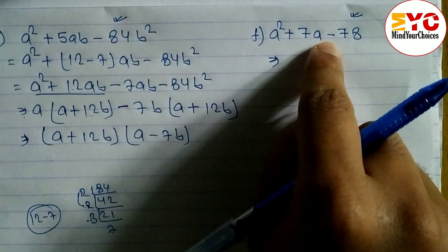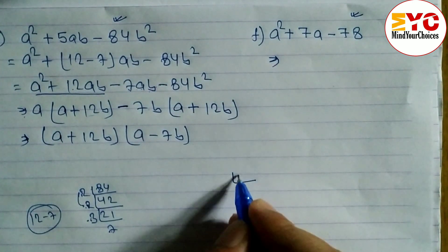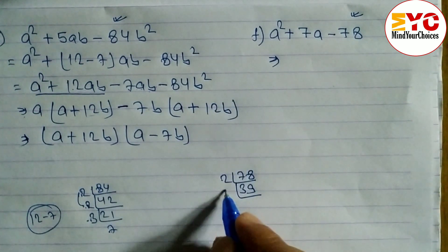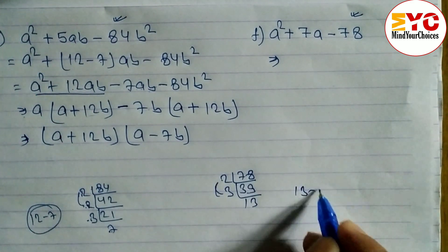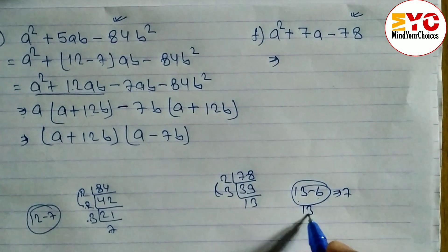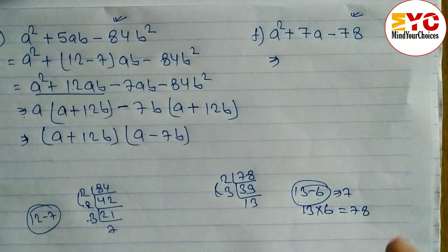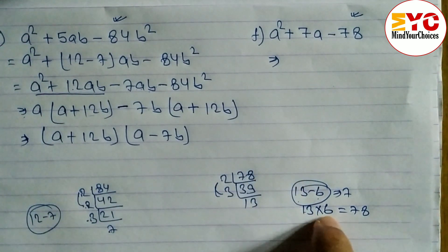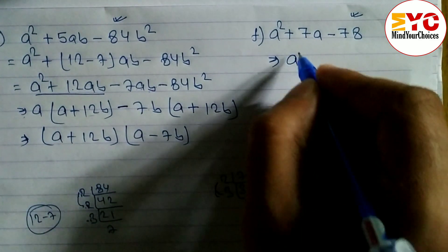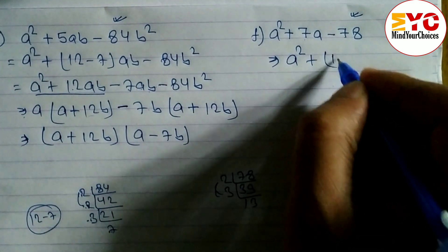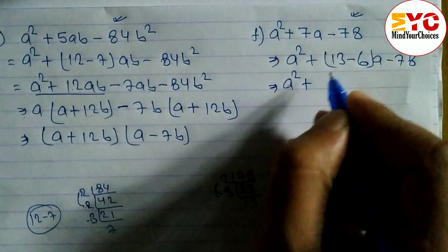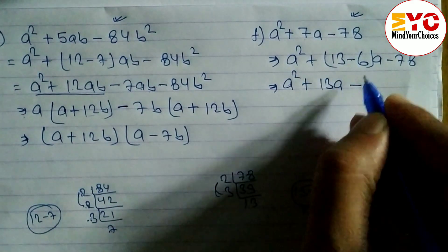Problem F: we need factors of 78 with subtraction 7. Trying: 2 × 39, giving 3 and 13. From factors: 13 × 6 = 78 and 13 - 6 = 7. So factors are 13 and 6. We write a² + 13a - 6a - 78, replacing 7a with (13 - 6)a. Opening: a² + 13a - 6a - 78.